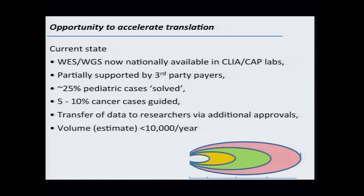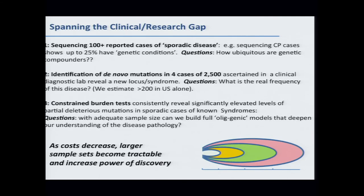We have further opportunities to accelerate translation with more lessons drawn from research. The current state shows some of these activities going on in CLIA environments, partly supported by insurance companies but still being leveraged by development programs. A fraction of pediatric cases are being solved — about a quarter in our hands, and generally similar in other centers. Maybe five percent of cancer cases are being properly guided by these activities. Globally, only about 10,000 cases per year are truly going through a clinical diagnostic environment bearing all the bells and whistles we've developed in the research environment.